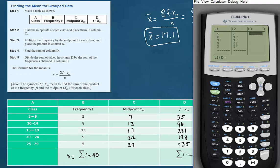I've typed the frequencies in list 1 and the midpoints in list 2. The next job is to multiply the corresponding entries in those lists.